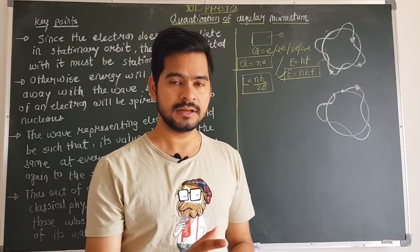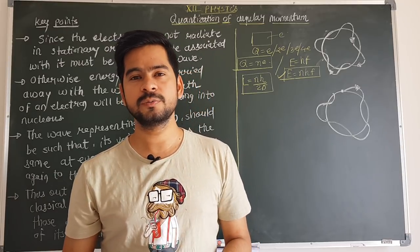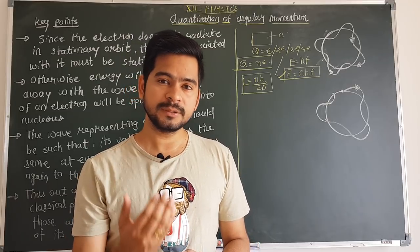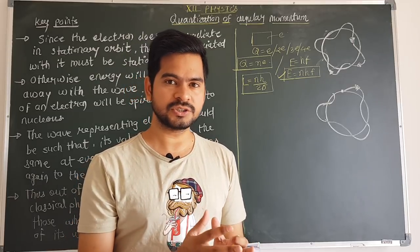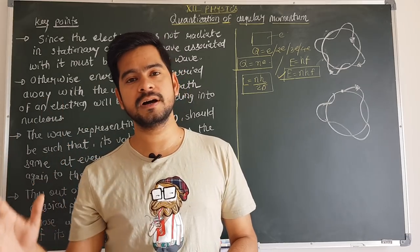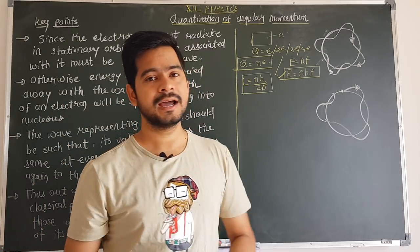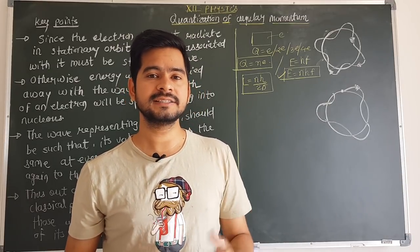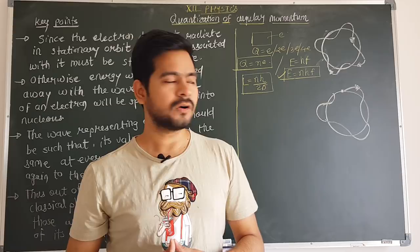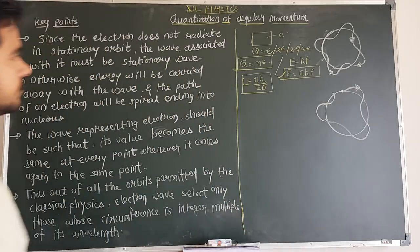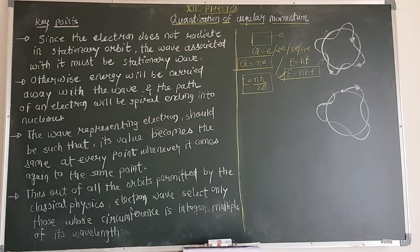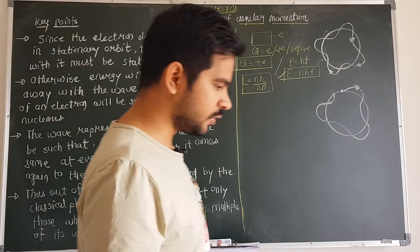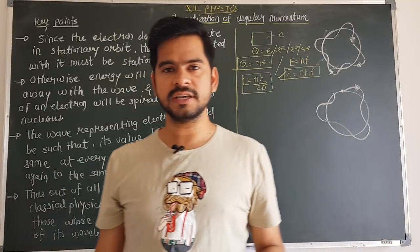Ten years later, another scientist, Louis de Broglie, explained the answer. After Bohr's postulate was published, de Broglie applied his thought process and ideas to explain why L = nh/2π.